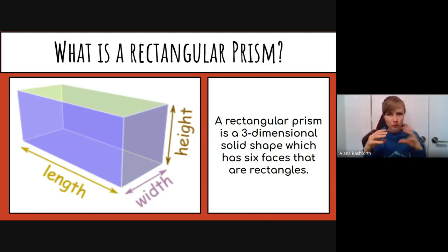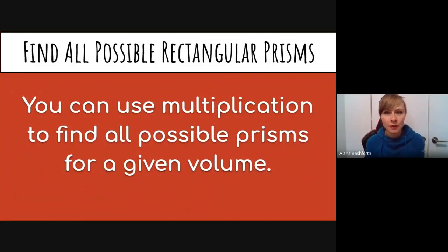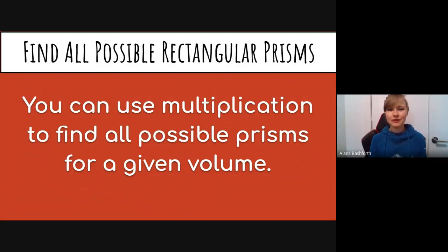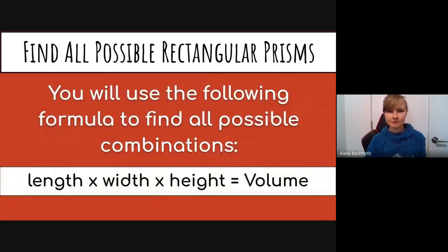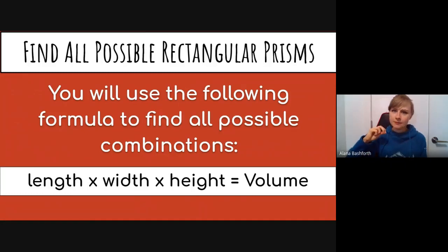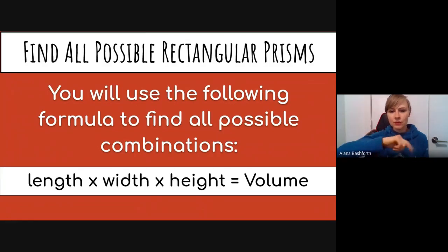We're going to be working with shapes that are long and skinny or short and wide — just rectangular prisms today. In this lesson you're going to be asked to find all possible rectangular prisms, and you can use multiplication to do that. You're multiplying three numbers together to equal the total volume: the length times the width times the height. It doesn't really matter which side you call the length, width, or height — you'll still get the same volume.